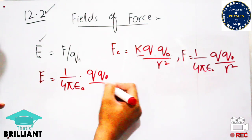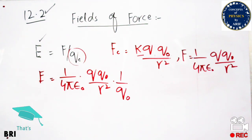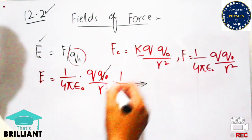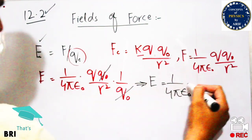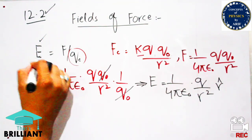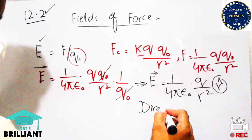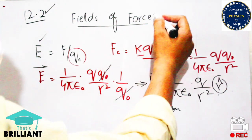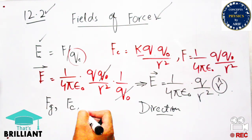Substituting the value of F: E equals 1 over 4πε₀ times q q-naught over r squared, divided by q-naught. The q-naught cancels out, giving the final expression: E equals 1 over 4πε₀ times q over r squared. This is the final expression for electric field intensity. Electric field is force per unit charge, with units newton per coulomb. It is a vector quantity, and r-hat shows the direction.